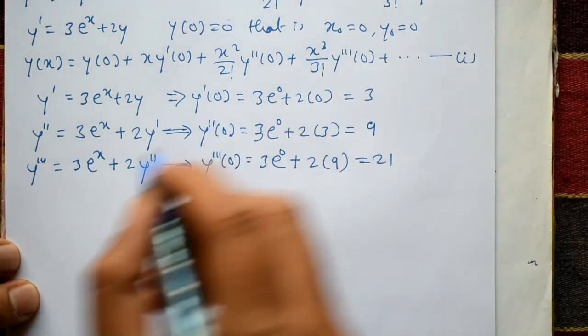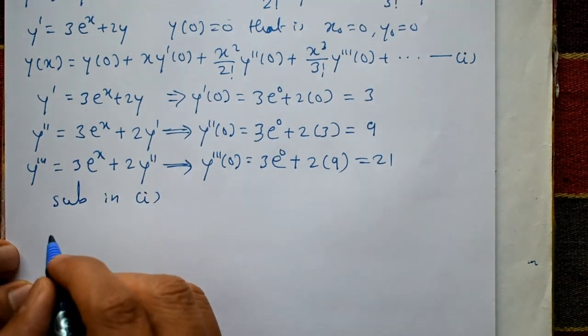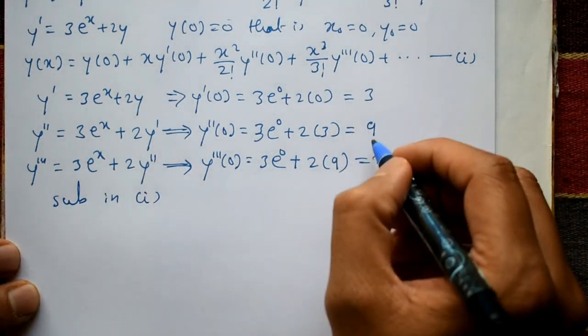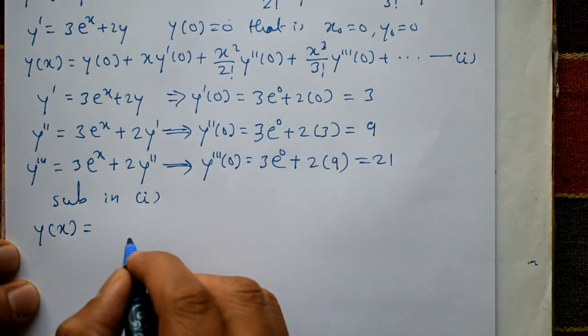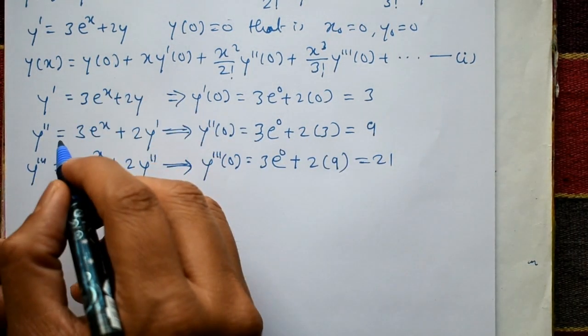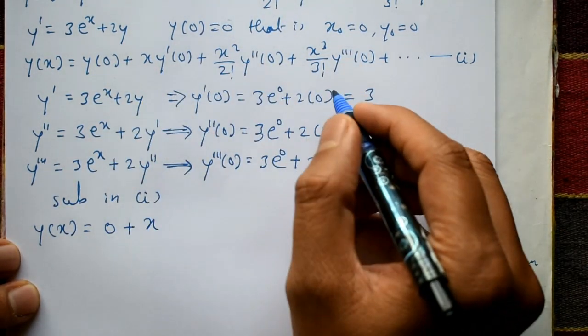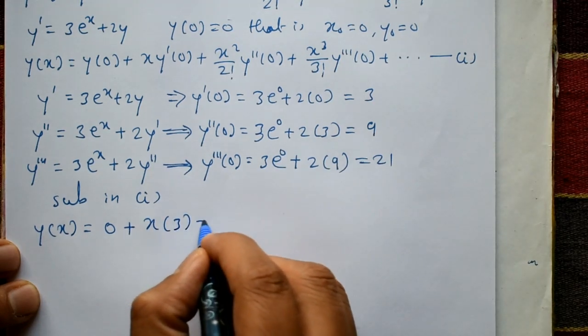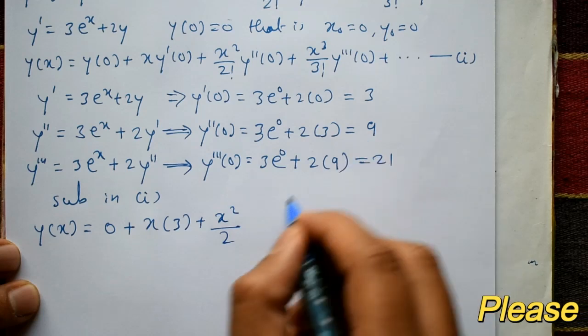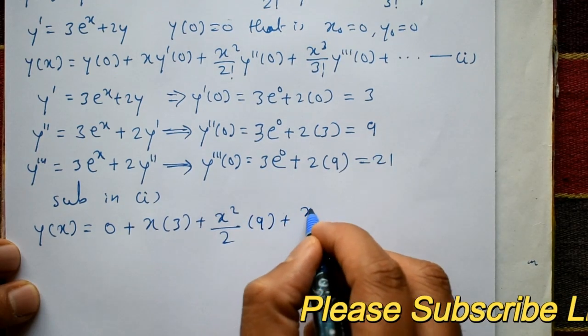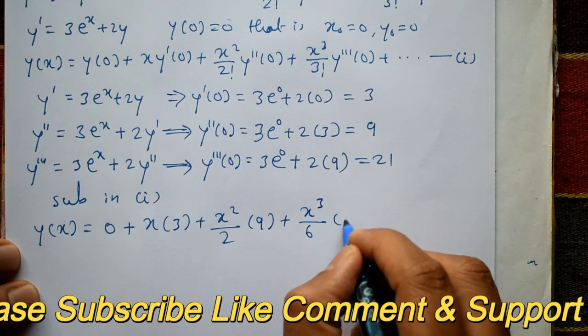These values substitute in equation number 1. Now y(x) = y(0) = 0 plus x·y'(0) = 3 plus (x²/2!)·y''(0) = 9 plus (x³/3!)·y'''(0) = 21.